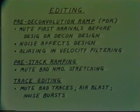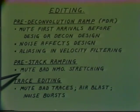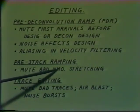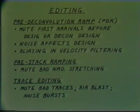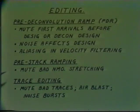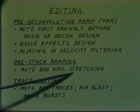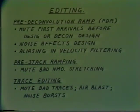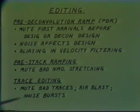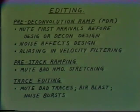Other places in the processing sequence where muting or ramping might be done are just before the common depth point stack. First arrival muting would normally be done again here to remove any noise that may have been missed by the initial pre-deconvolution ramp, and also to remove the shallow parts of longer offset traces which may have become distorted due to NMO stretching. General trace editing might also be done to kill bad traces, strong air blasts, and other forms of noise bursts.